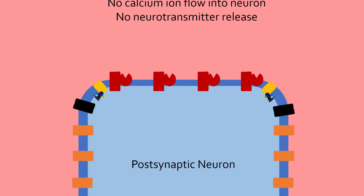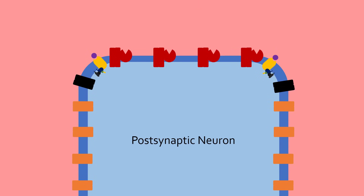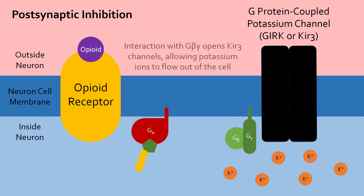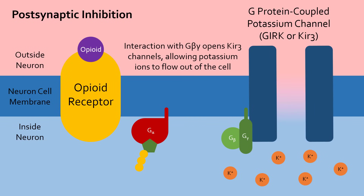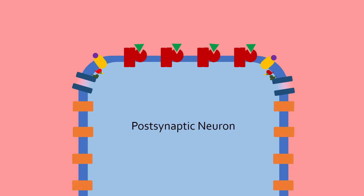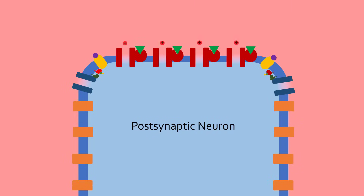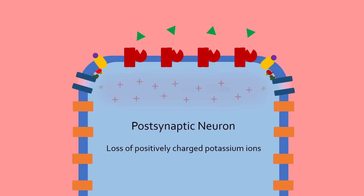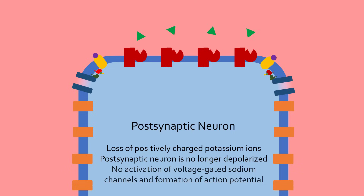In postsynaptic inhibition, opioids bind to opioid receptors on the postsynaptic neuron. Once again, the G-beta-gamma subunit is released and interacts with potassium channels. However, in this case, this interaction opens the channels and positively charged potassium ions flow out. So if neurotransmitter was released and depolarization was occurring, the loss of positive charge from potassium ions leaving the neuron negates the positive charge from sodium ions entering the neuron, making it difficult for an action potential to form.